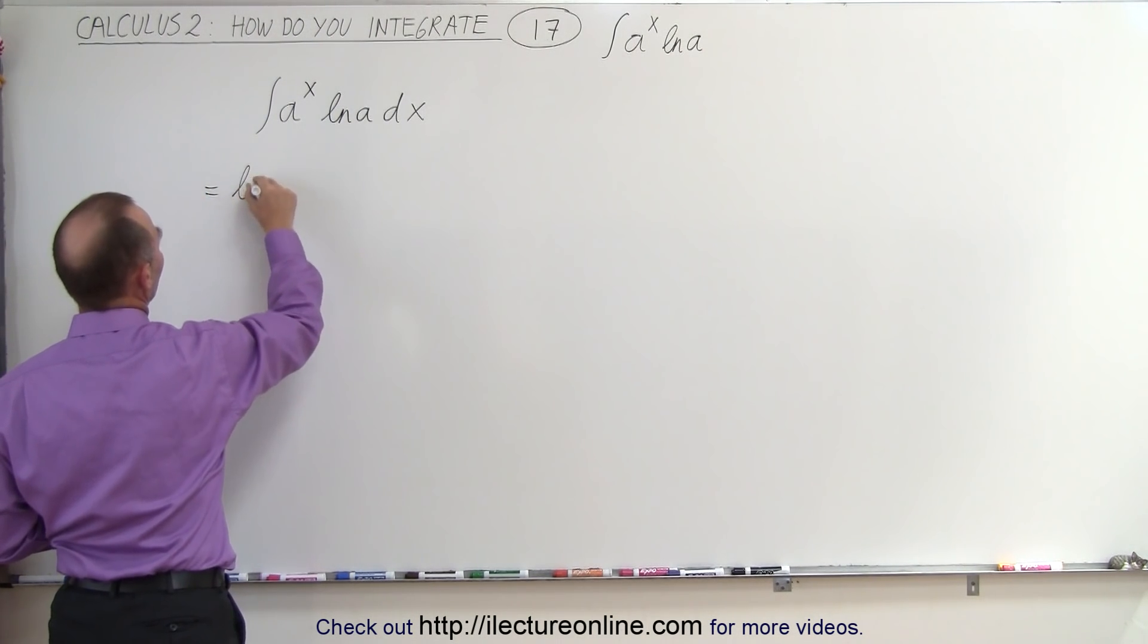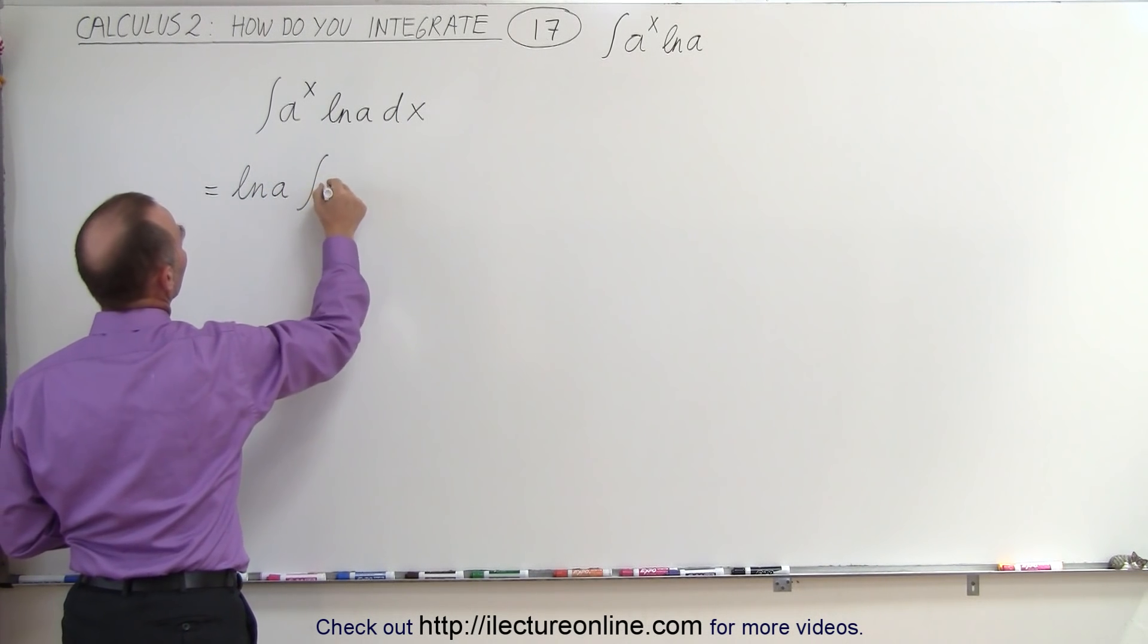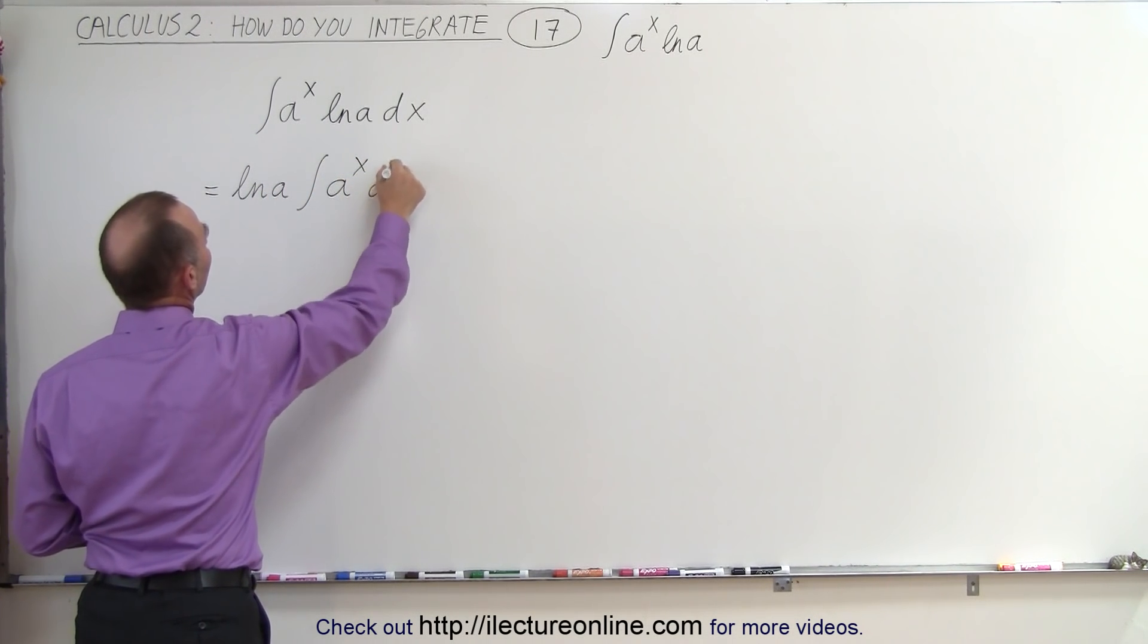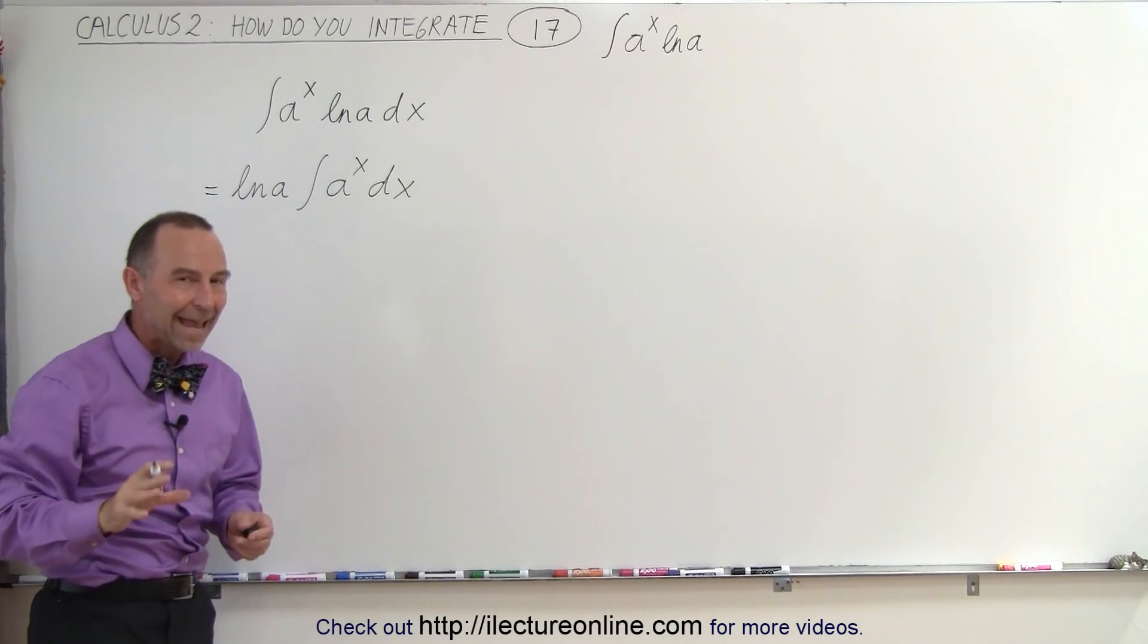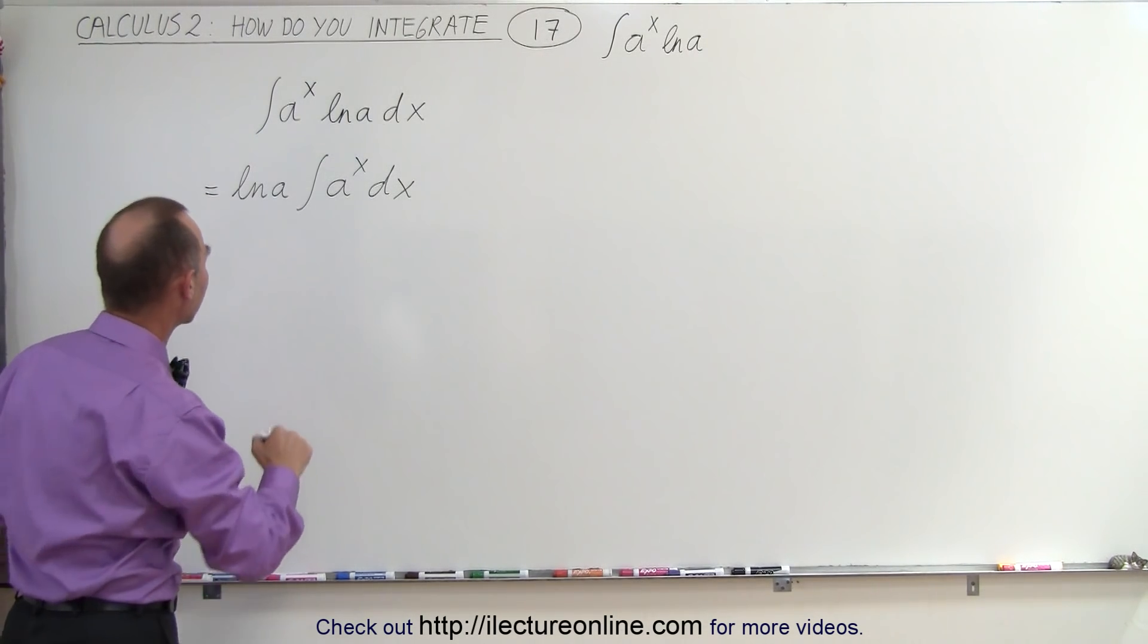So this becomes the natural log of a times the integral of a to the x dx, and notice carefully it's not e to the x, it's a to the x. So we have to use our little trick again.